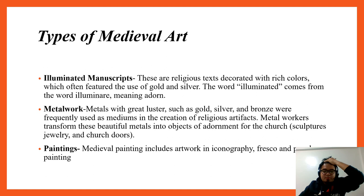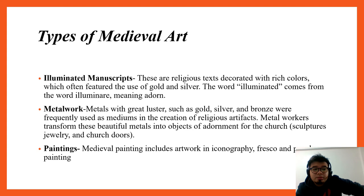Metal work: metals with great luster, such as gold, silver, and bronze, were frequently used as a medium in the creation of religious artifacts. Metal workers transformed these beautiful metals into objects of adornment such as sculptures, jewelry, and church doors — which is why church doors were very heavy, being made of pure metal.